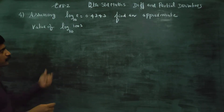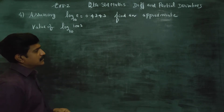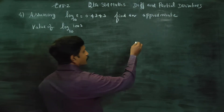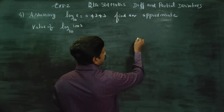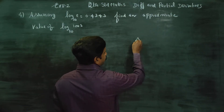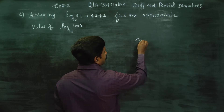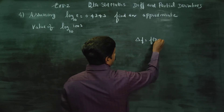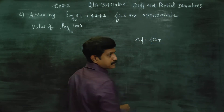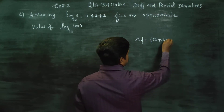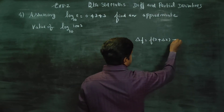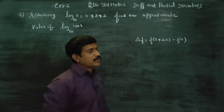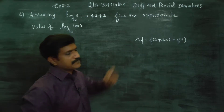Before proceeding into this sum, just recall the formula of delta f. Delta f is f of x plus delta x minus f of x.